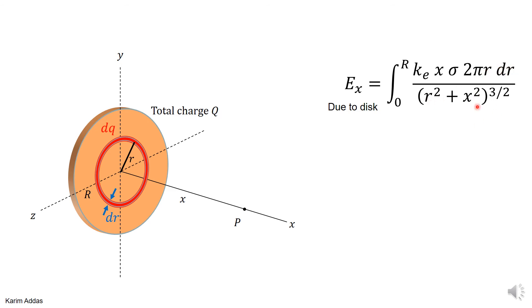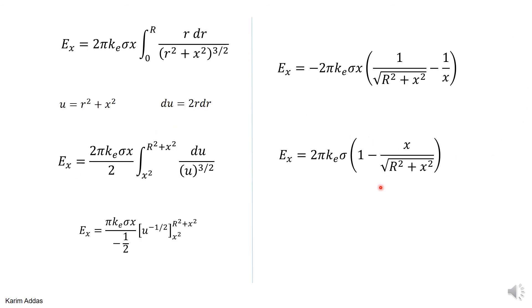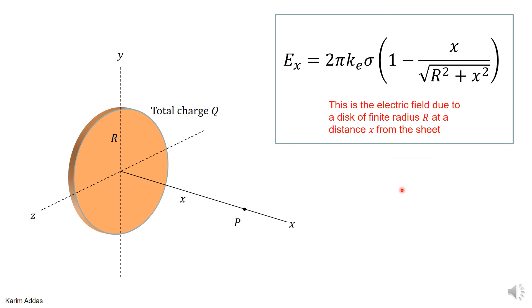Everything is ready for integration; it's now a math problem. We make a substitution: let u equal r squared plus x squared. When doing that you must change the limits of integration accordingly, since we are now integrating over u instead of r. Going through those details, the final expression gives you the electric field at any position x on the x-axis — this is the result for the electric field at point P at some distance x from the origin.